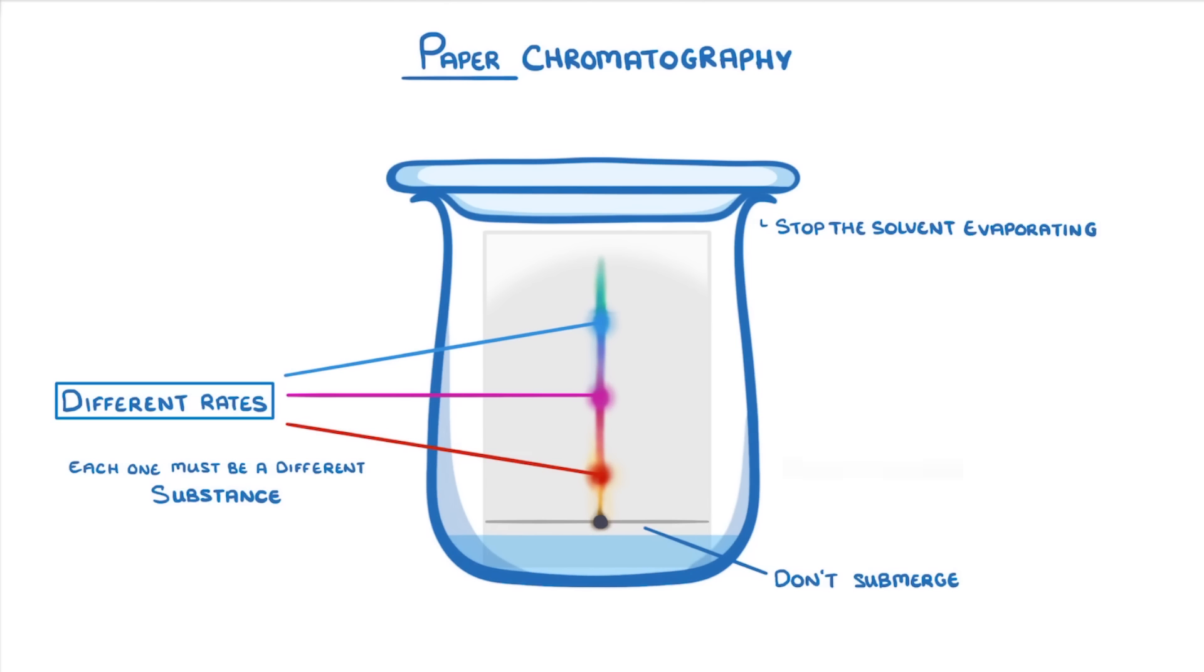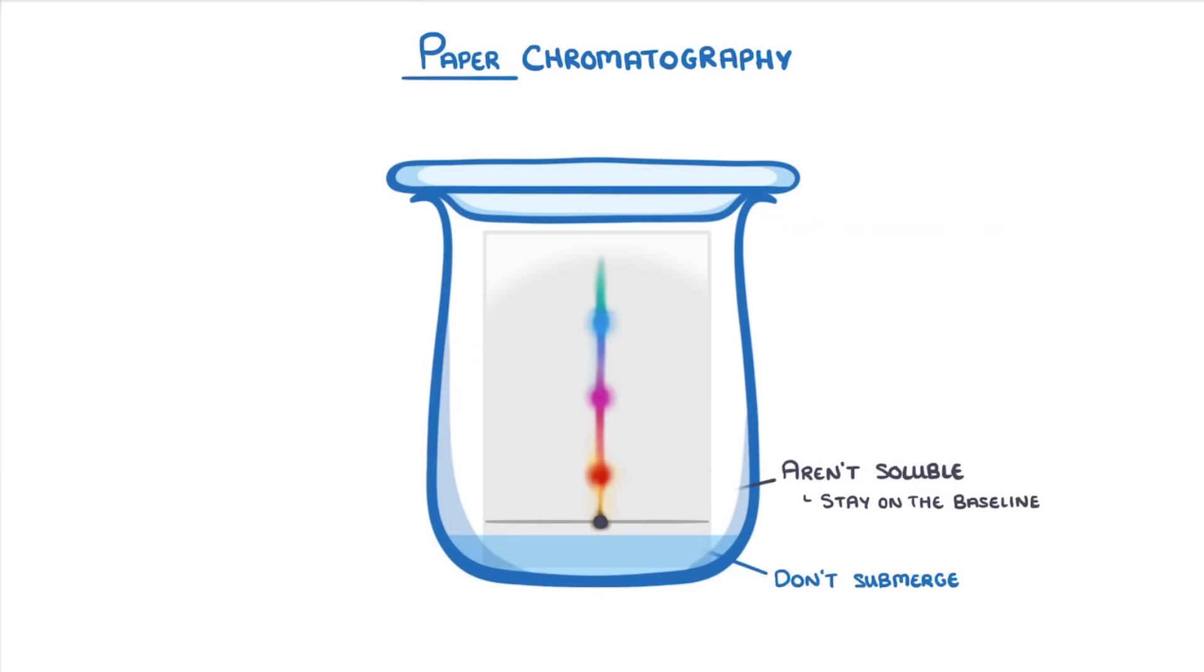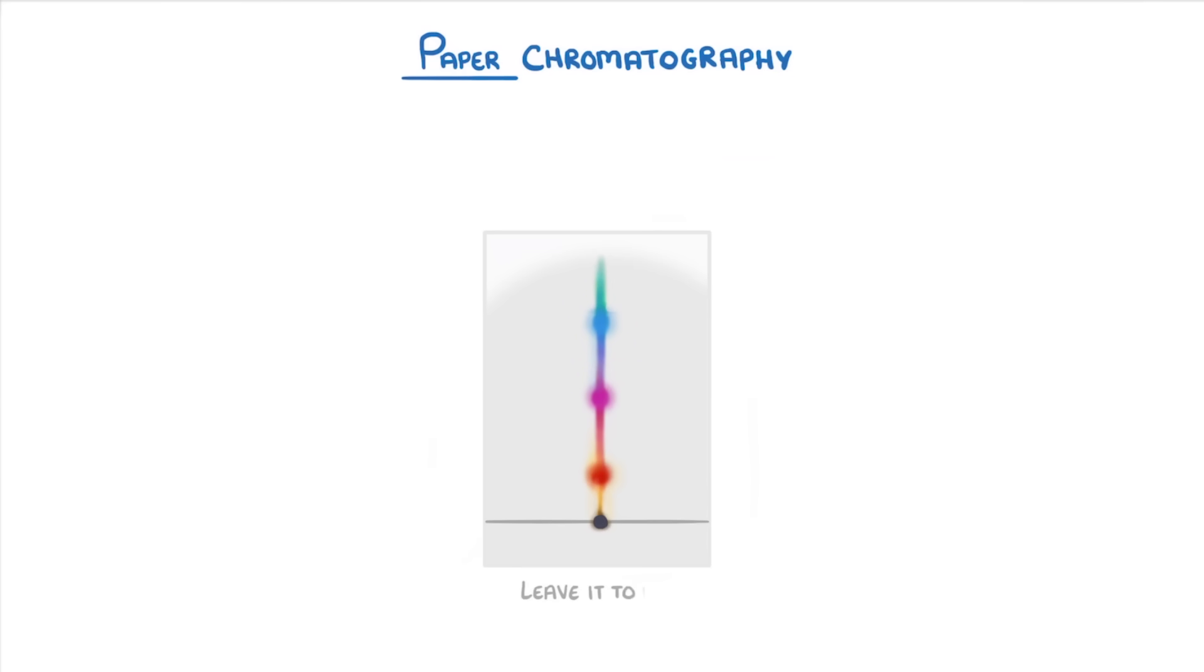However, if any of our chemicals aren't soluble in that solvent, then they won't be able to dissolve and move up the paper, so they'll just stay on the baseline. Once the solvent has almost reached the top of the paper, we take it out and leave it to dry, and the pattern of spots that we have left is called a chromatogram.